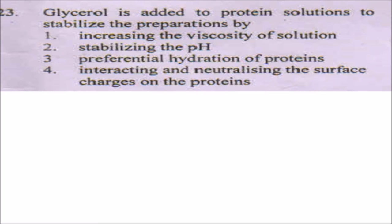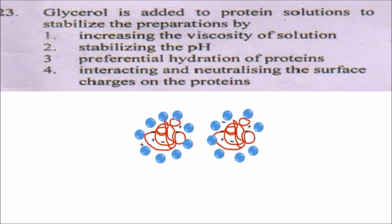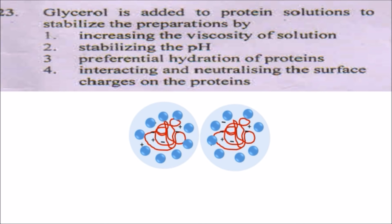The next question is: glycerol is added to protein solutions to stabilize the preparations. What actually happens is that protein has some charges on itself. In a solution, in the absence of glycerol, proteins will interact with each other and clump out or not remain in dissolved form. When we add glycerol to the solution, it forms a bridge around the protein molecules — this is known as preferential hydration of proteins — and this prevents proteins from interacting with each other, keeping them in the dissolved form. So the answer will be preferential hydration of protein.